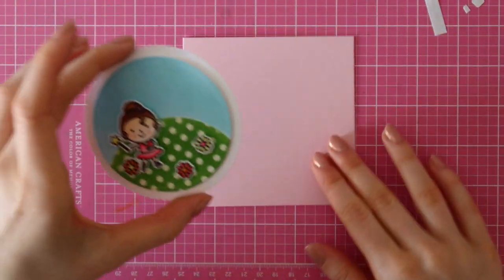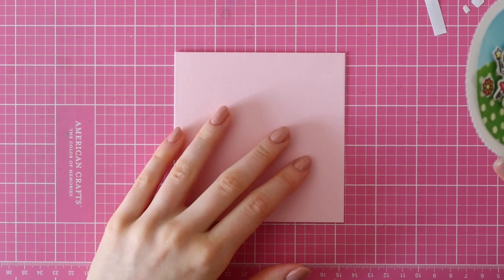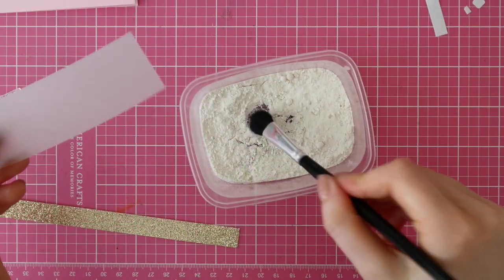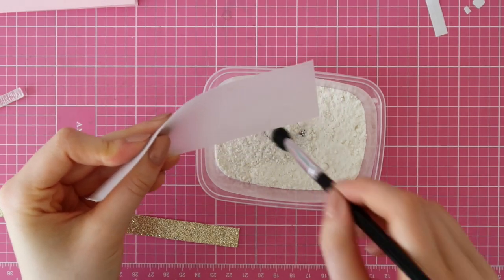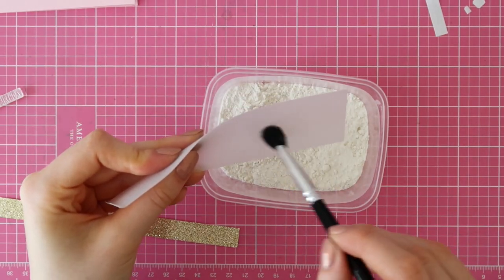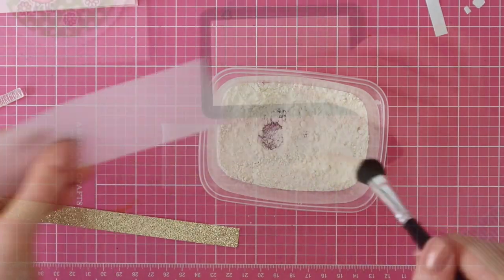I cut this cardstock to 4 1⁄4 inch by 8 1⁄2 and then I scored it at 4 1⁄4 so I would have a lovely square card. I used some cotton candy cardstock from Simon Says Stamp by the way.